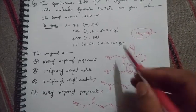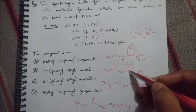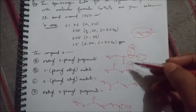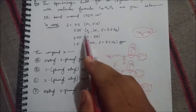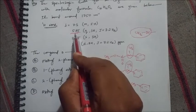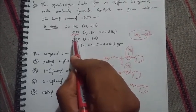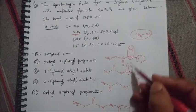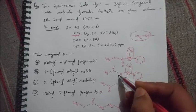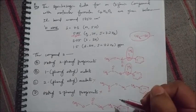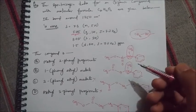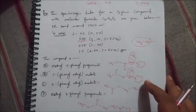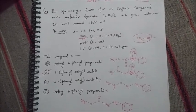The data shows 5.85 ppm (quartet, 1H), which is a higher chemical shift value. This can only be achieved if this proton is deshielded. Among the two remaining options, in option B this proton is deshielded due to the presence of the electronegative oxygen, causing the increase in its chemical shift value. Therefore, option B — 1-phenylethyl acetate — is the correct answer. Thank you for watching; hope you liked the video, please like and subscribe to our channel.